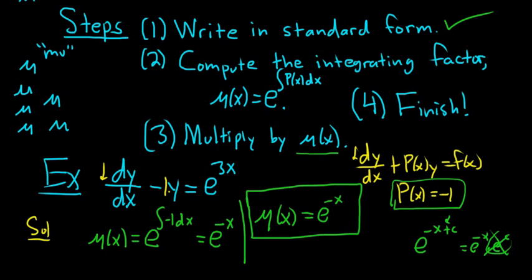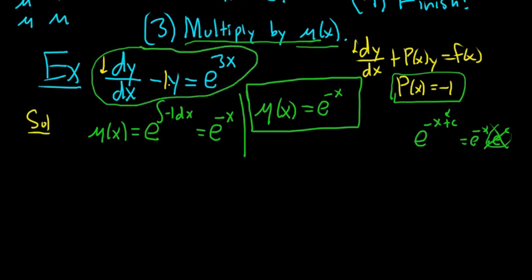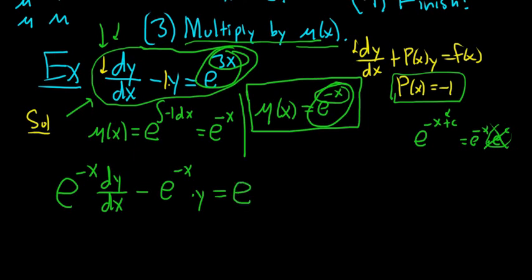Step 3: multiply the differential equation in standard form by mu of x = e^(-x). So we get e^(-x)·dy/dx minus e^(-x)·y equals e^(-x)·e^(3x). On the right-hand side, adding the exponents gives e^(2x), since -x + 3x = 2x. So the right-hand side is e^(2x). Step 3 is done.